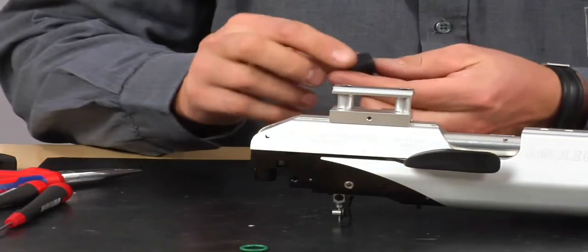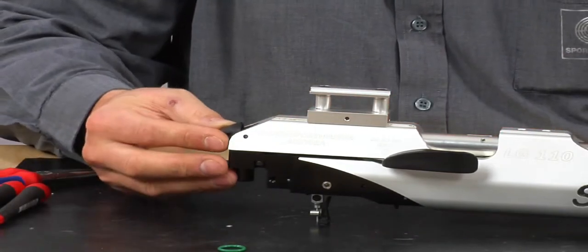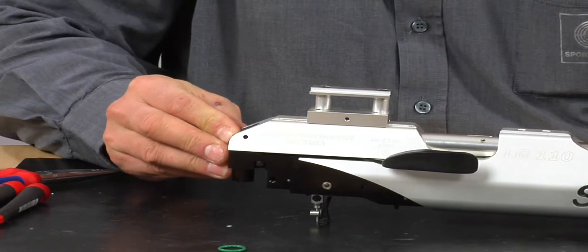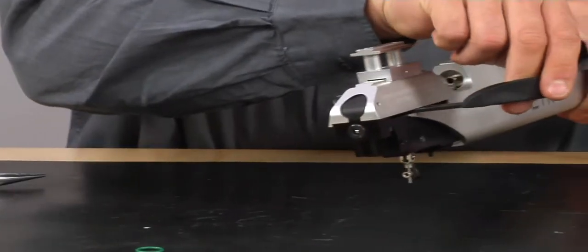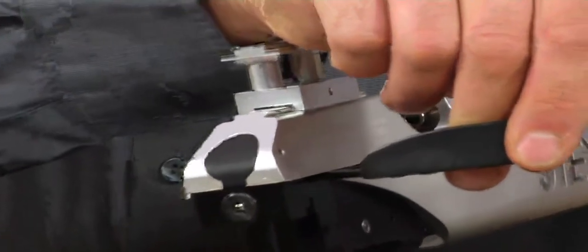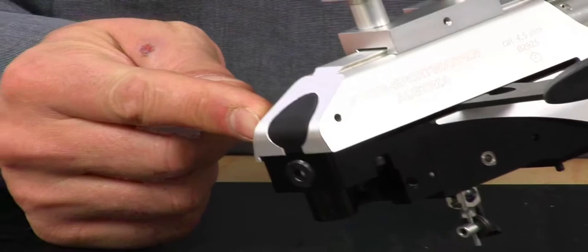Now insert the bolt cover from the rear. Should the cover be inserted too far into the unit, it can be brought back to the correct position by use of the cocking lever. The cover is fixed by pushing in the pin at the side.